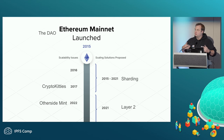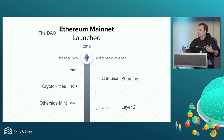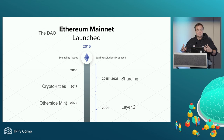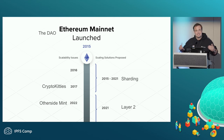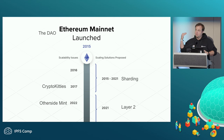Through this timeline, sharding was the solution many people were talking about for Ethereum. Sharding is effectively taking pieces of data and scaling it across different nodes. Then the next cycle comes — 2022.